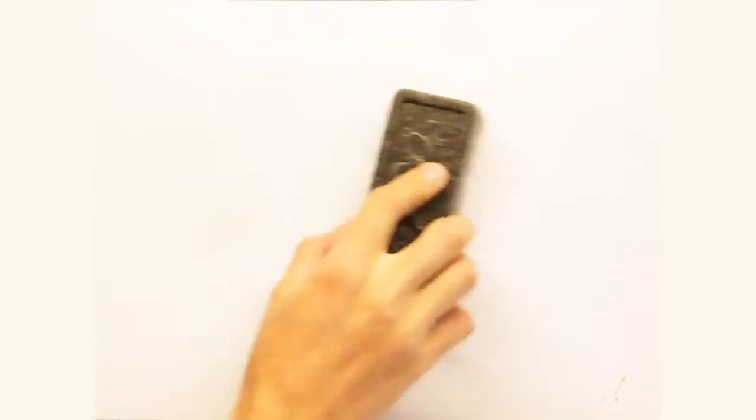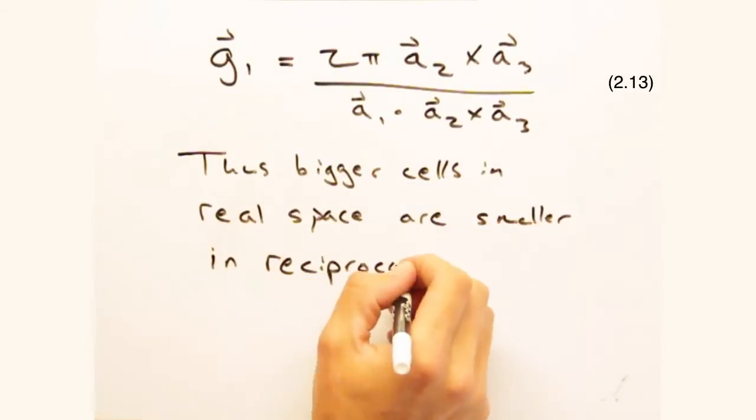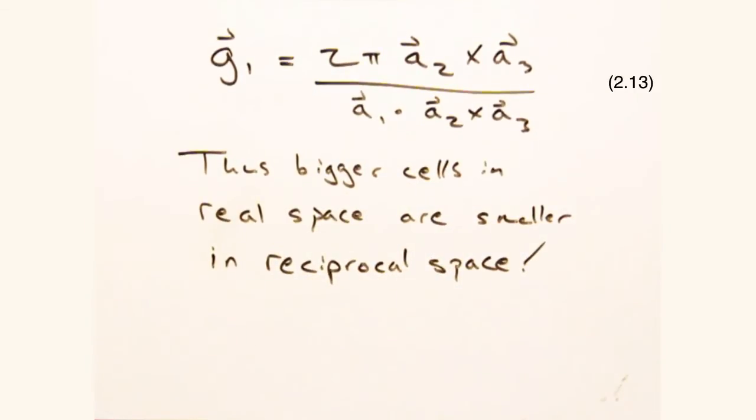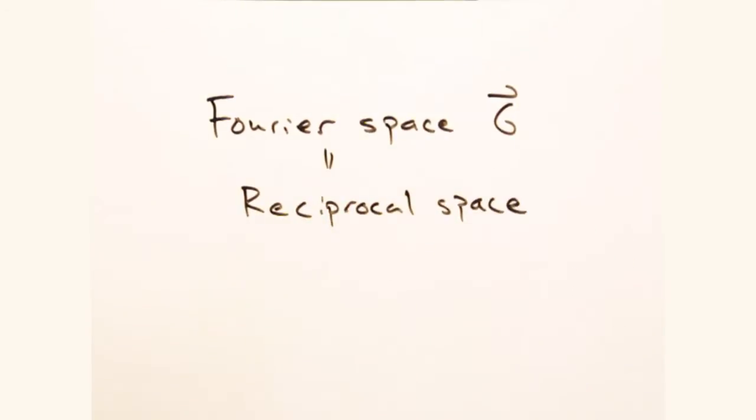Eric mentioned the scale factor went inversely with the cell volume. So a bigger cell in real space is a smaller one in our Fourier space, which is why it's sometimes referred to as reciprocal space. Just a heads up that the two are one and the same.